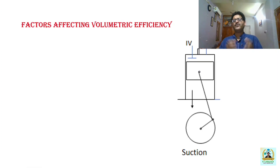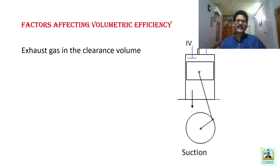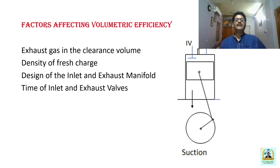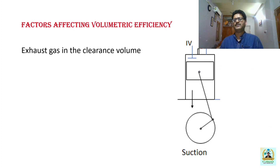Now we will discuss the different factors which affect the volumetric efficiency of an internal combustion engine. There are four important factors: the exhaust gas in the clearance volume, the density of the fresh charge, the design of the inlet and exhaust manifold, and the timing of inlet and exhaust valves. These four are the major factors which affect the volumetric efficiency.